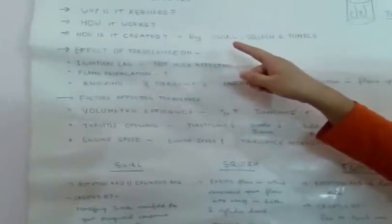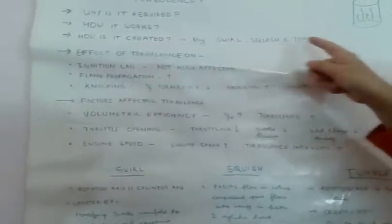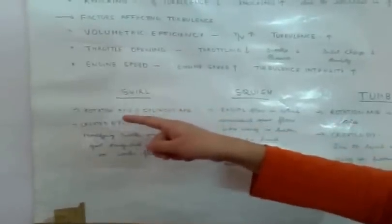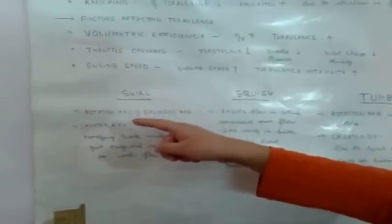How is turbulence created? Turbulence is created by three motions called swirl motion, squish motion, and tumble motion. In swirl motion, the rotation axis of the air-fuel mixture is parallel to the cylinder axis. It can be created or increased by modifying the intake manifold to give a tangential component to the intake flow.